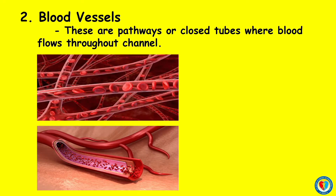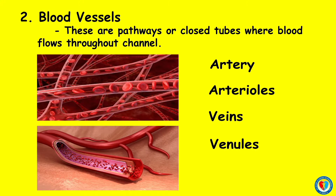Blood vessels are pathways or closed tubes where blood flows throughout the body. Blood vessels have five types: arteries, arterioles, veins, venules, and capillaries. The artery is any of the muscular-walled tubes forming part of the circulation system by which blood, mainly oxygenated blood, is conveyed from the heart to all parts of the body. Arterioles are small branches of an artery leading into capillaries.